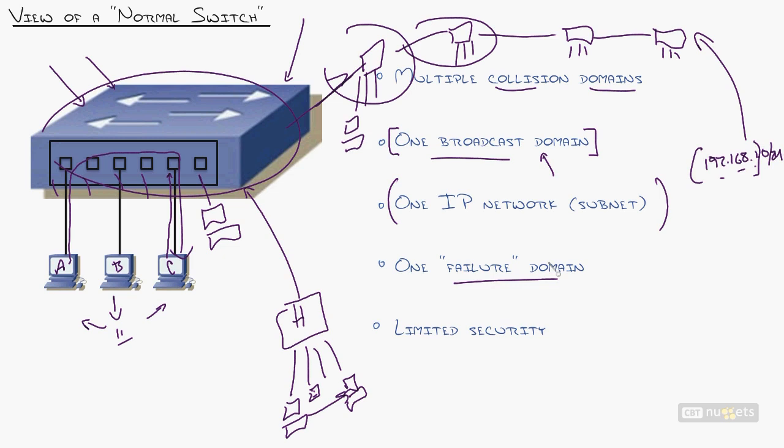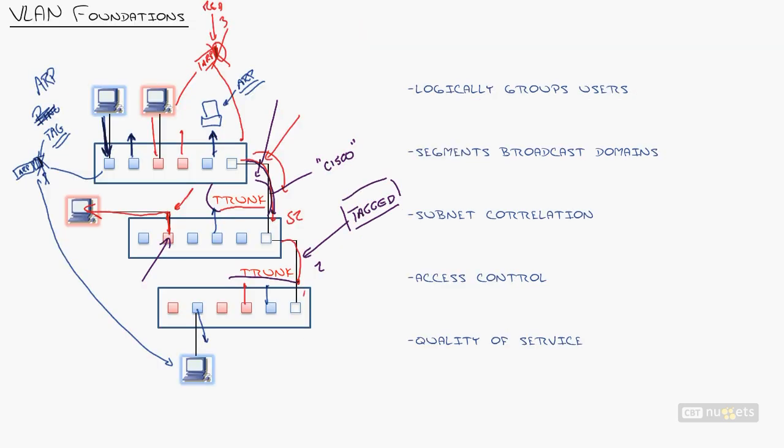This also represents one failure domain, meaning if you end up with a loop in the network or a rogue DHCP server handing out wrong IP addresses, you have computers dropping off the network like flies. This provides big security ramifications because people can see each other.